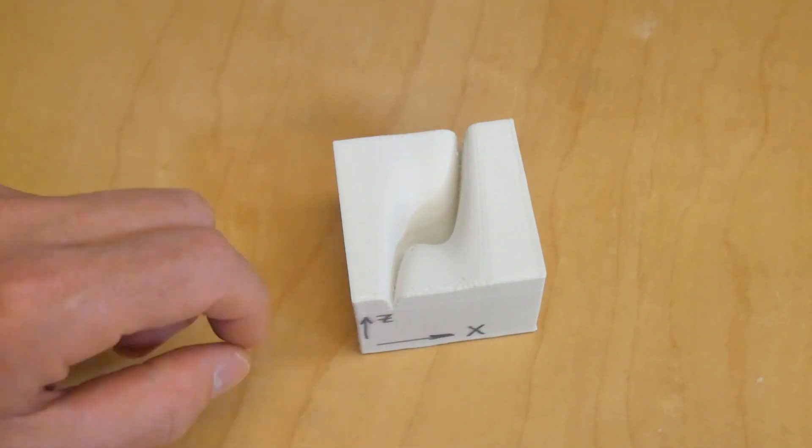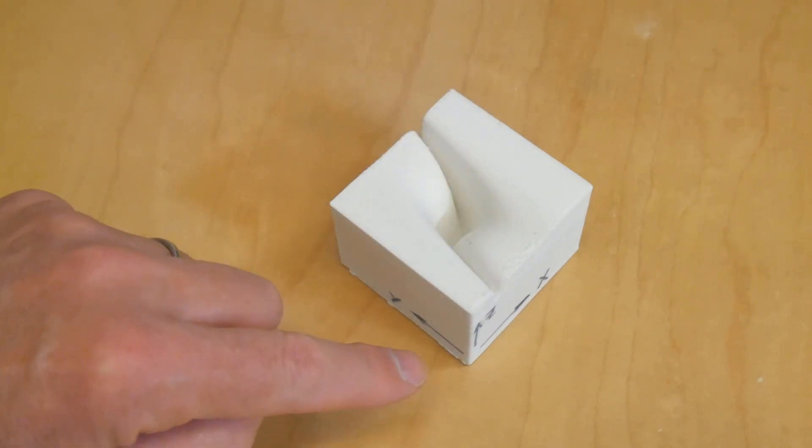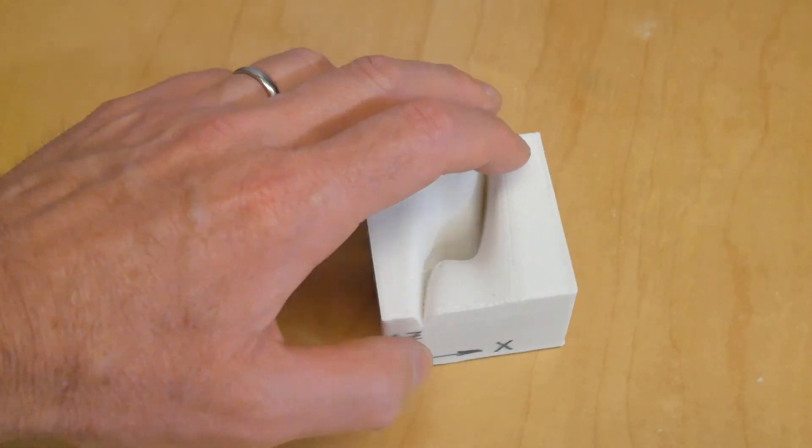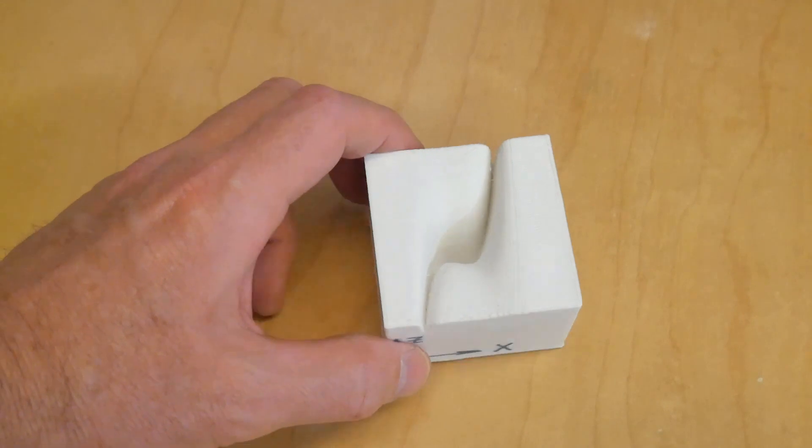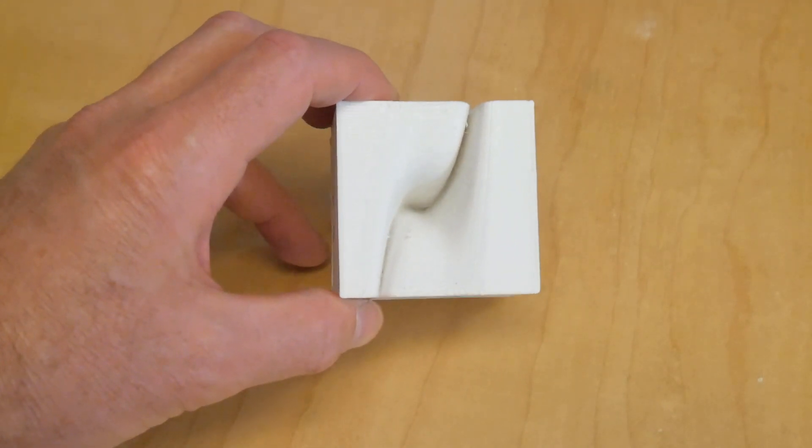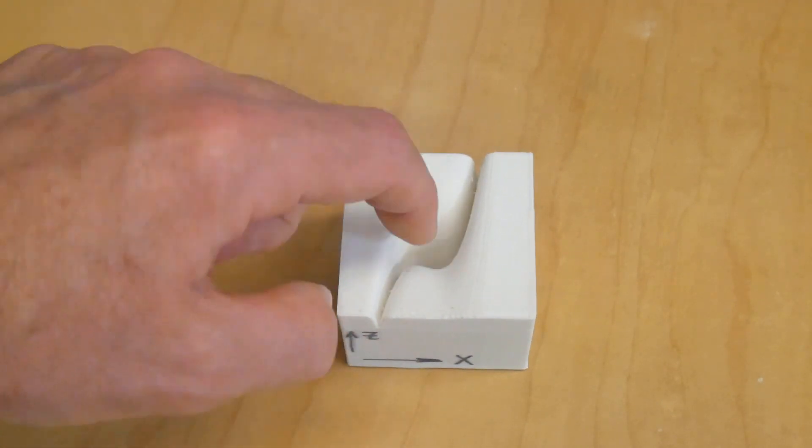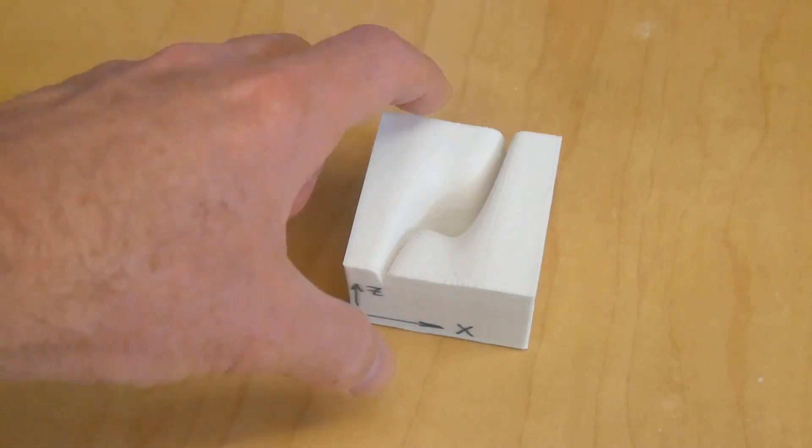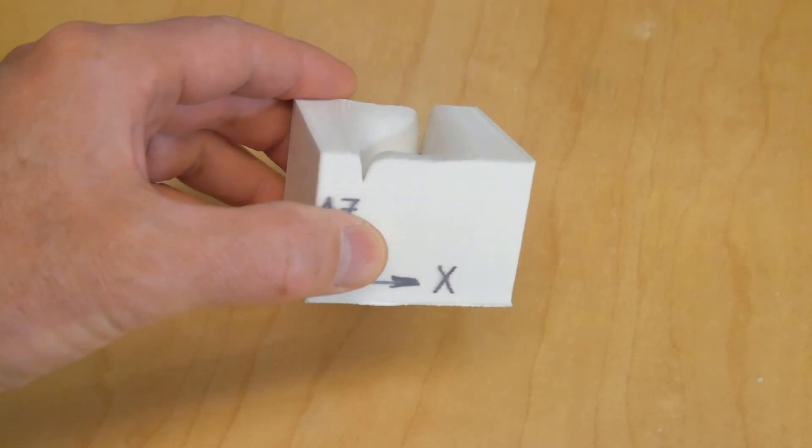For every value of x and every value of y, there's a value of z. Remember those blue colors said that the value was low? Well, that's it right there. I can put my finger in there. That's a function.